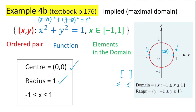The circle is centered at (0, 0) with radius 1. So the minimum y value on our graph is 0 − 1 = −1, and the maximum y value is 0 + 1 = 1. That means our range is from −1 to positive 1. Since these two points are the endpoints, we use square brackets and greater than or equal to / less than or equal to signs for the range as well.